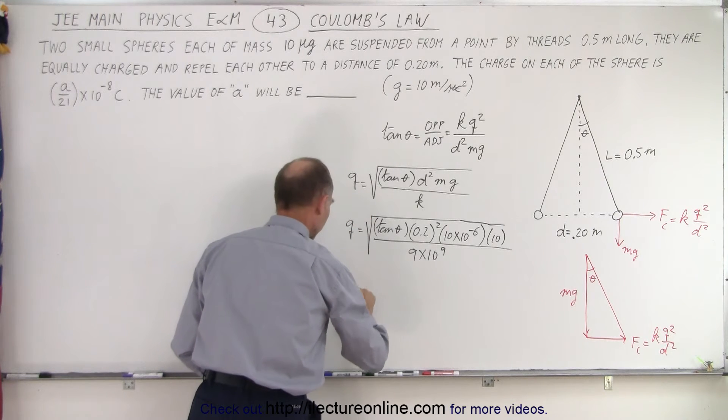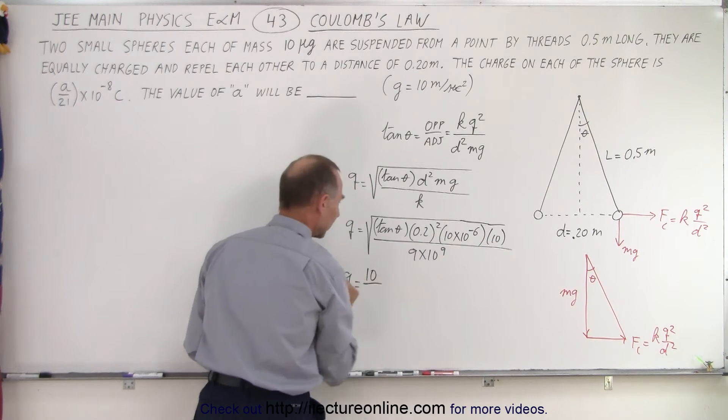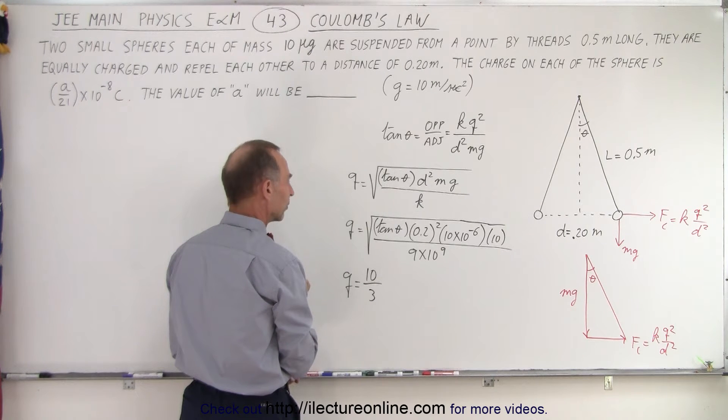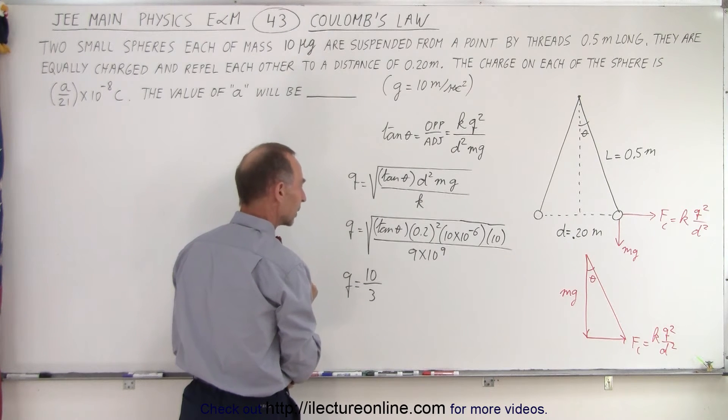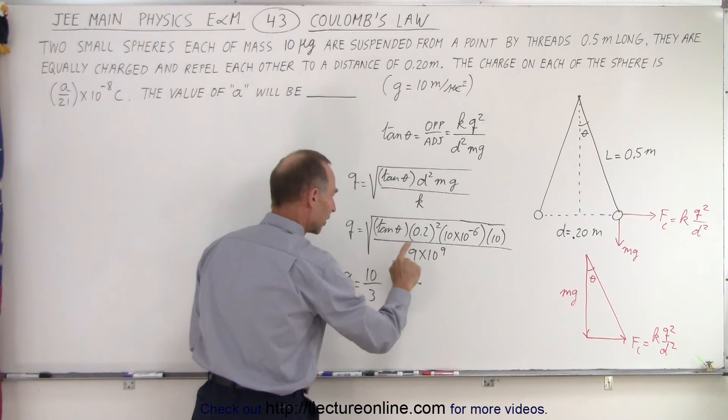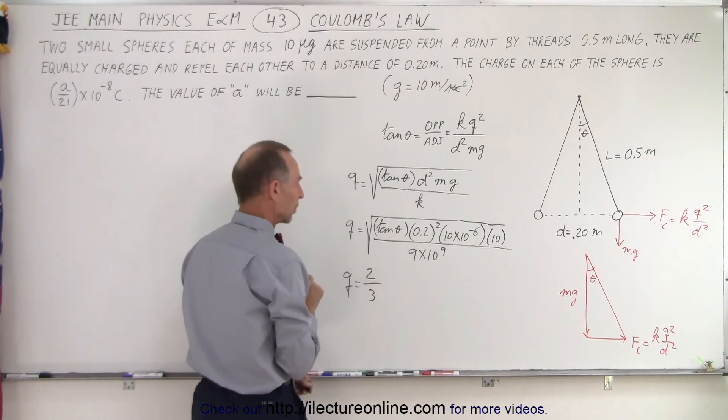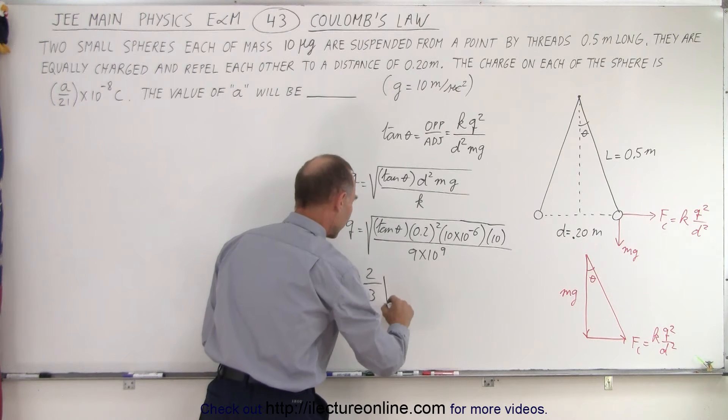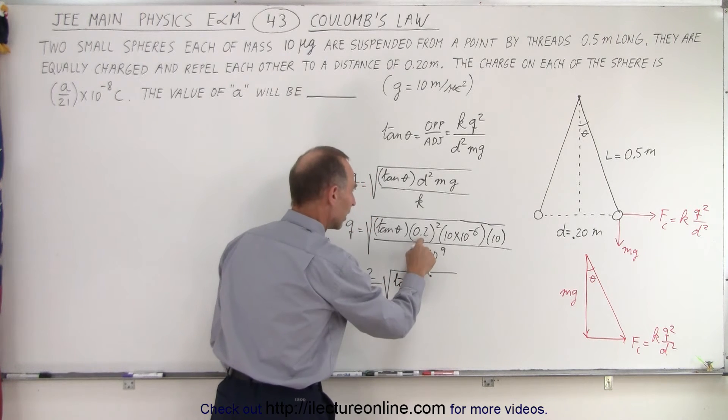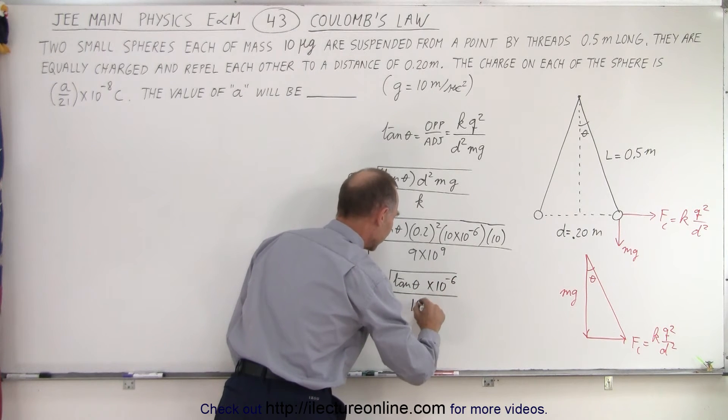So we have Q is equal to 0.2 times 10. So it would be 10 divided by the square root of 9, which is 3. Actually, it's 10 times 0.2. That would be 2 over 3. And then we have what's remaining. We have the tangent of theta, and we have times 10 to the minus 6 divided by 10 to the ninth.